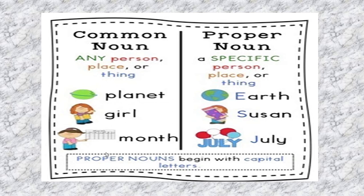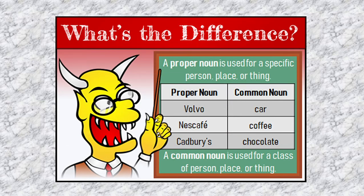Now, there is specific information. Children, proper nouns always begin with capital letters, and you should always remember this.